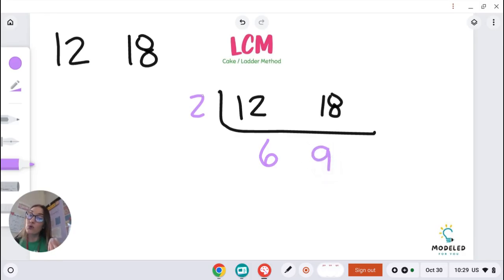18 divided by two gives me 9. So now I have two more numbers that I can work with. Let's make our next layer of our delicious tiered cake. So now I have 6 and 9. I know 2 doesn't go into both of them, but 3 certainly does.